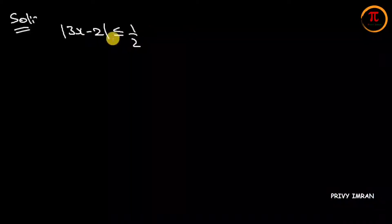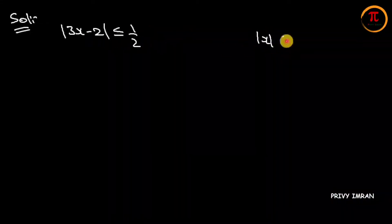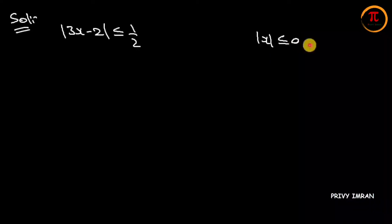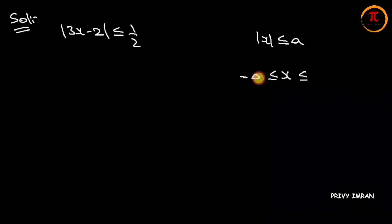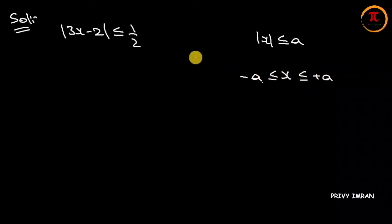If you observe, this is in the form of modulus of x is less than or equal to a. If modulus of x is less than or equal to a, then x lies in between minus a to plus a, where a is 1 by 2.